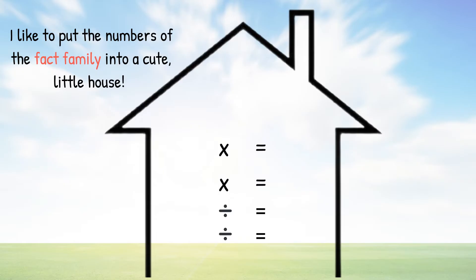I like to put the numbers of a fact family into a cute little house. We'll put our total number at the top. That'll be the largest number. In this equation, it's going to be 24. And then my other two numbers in this fact family are going to be 6 and 4.